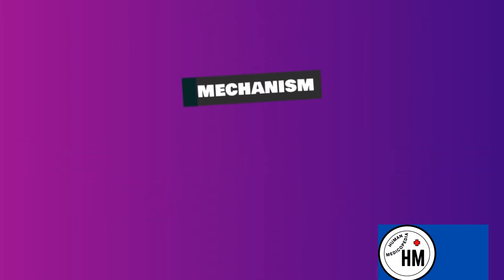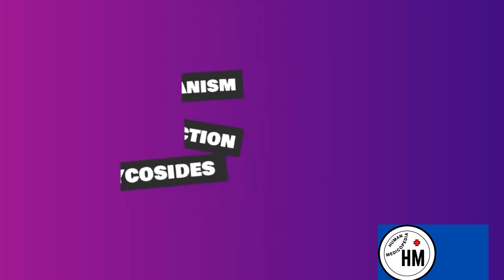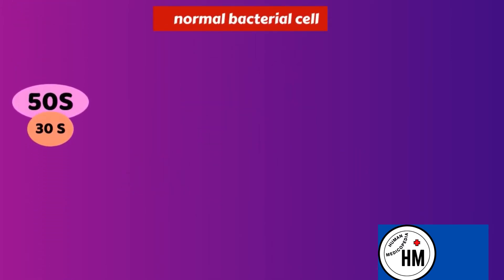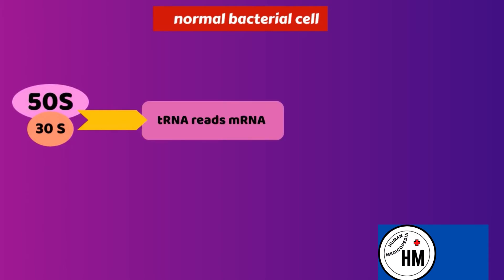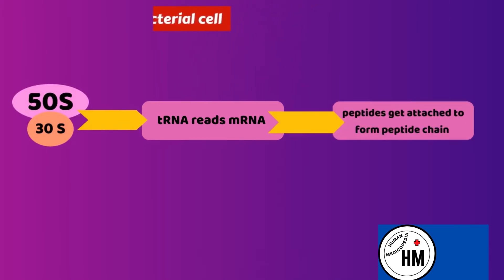Let's talk about the mechanism of action of aminoglycosides. In a normal bacterial cell, protein synthesis involves the formation of an initiation complex with the 50S and 30S subunits along with transfer RNA. The transfer RNA reads code from messenger RNA, and according to these codes, peptides get attached to form a peptide chain.